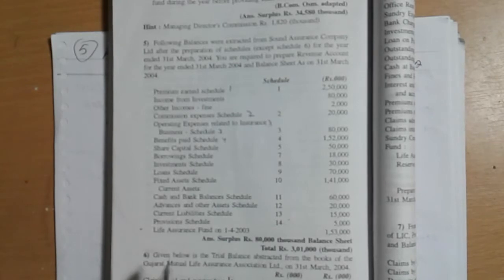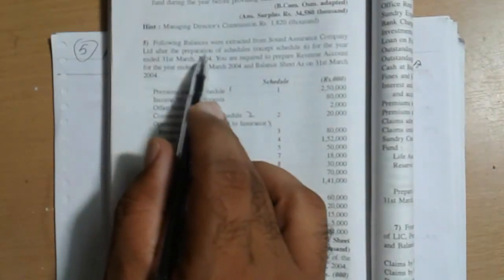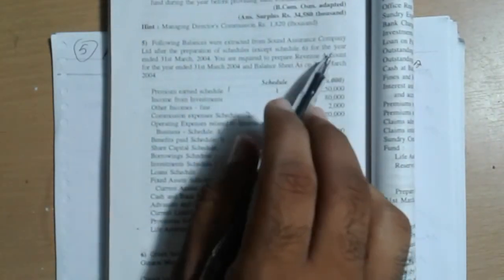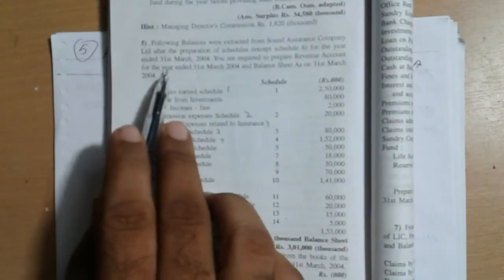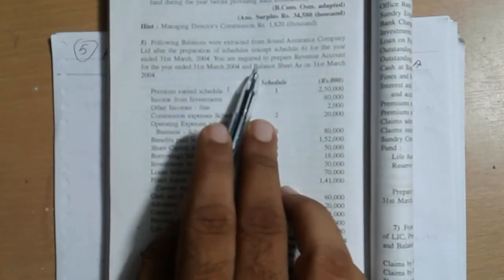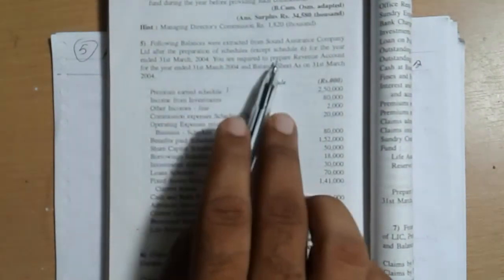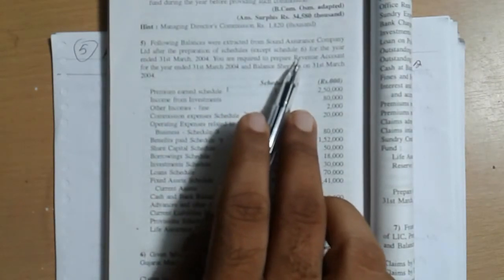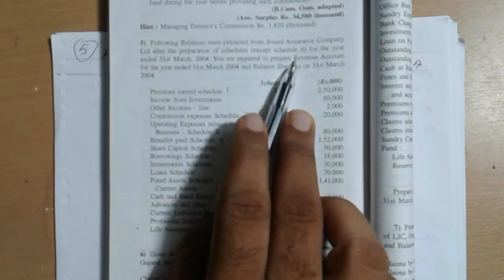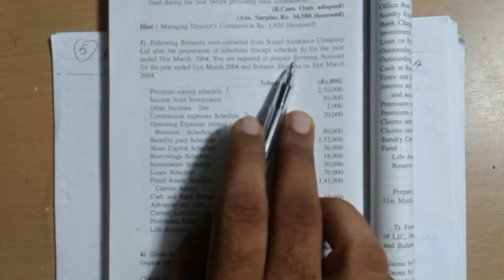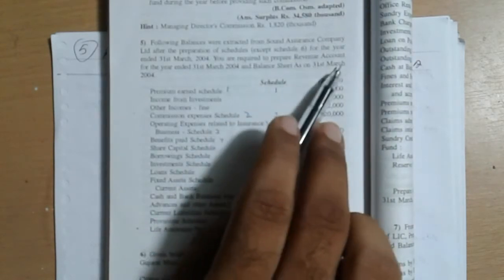Problem number fifth: the balance was extracted from Son Assurance Company Limited after the preparation of schedules. Schedule prepared except six, which is reserve and surplus where profit needs to be transferred. This hasn't been done for the year ending 31st March 2004.